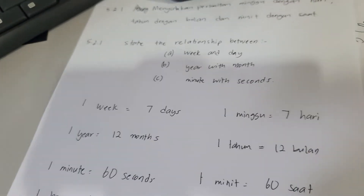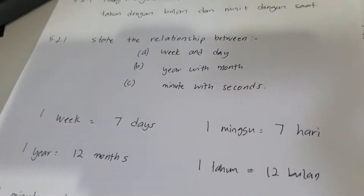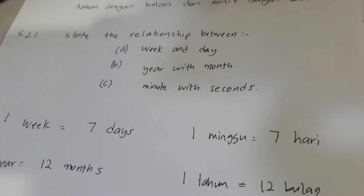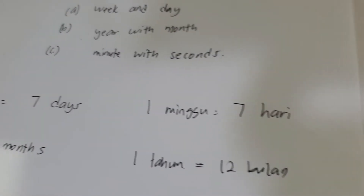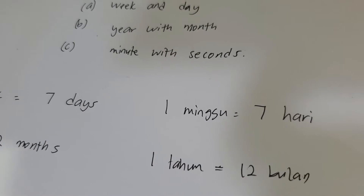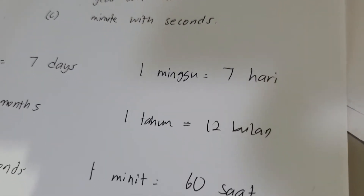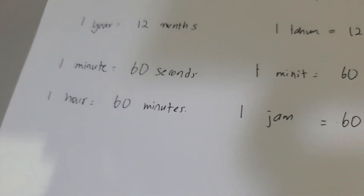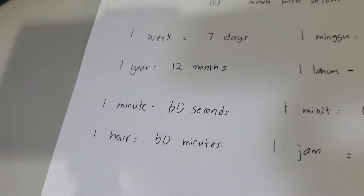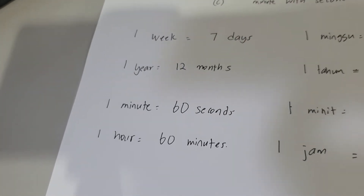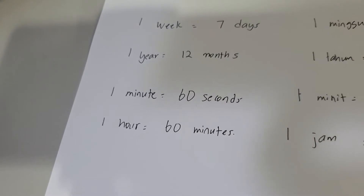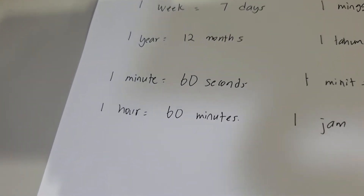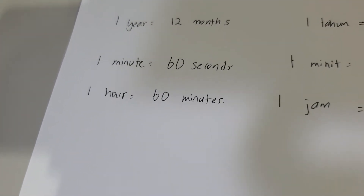Today's topic will focus on the relationship between week and day, year with month, and minute with seconds. Let me show you the formula that you need to understand for today. First, you have to understand: 1 week equals 7 days, 1 year equals 12 months, 1 minute equals 60 seconds, and 1 hour equals 60 minutes.